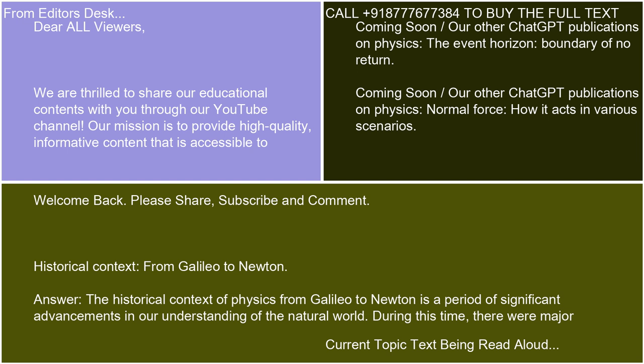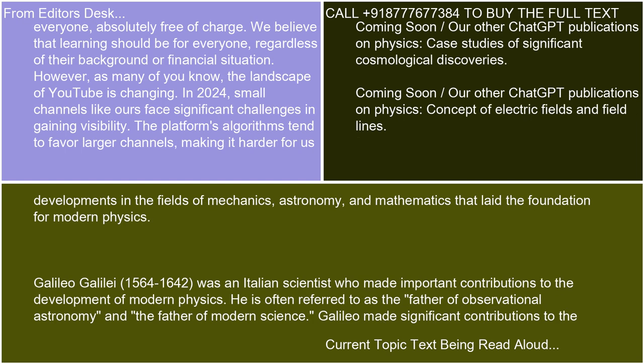The historical context of physics from Galileo to Newton is a period of significant advancements in our understanding of the natural world. During this time, there were major developments in the fields of mechanics, astronomy, and mathematics that laid the foundation for modern physics.